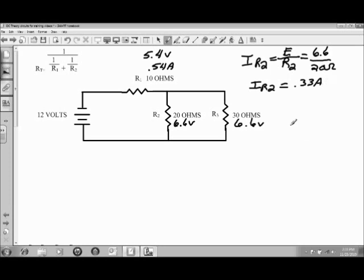We can repeat that step again. The current for R3 is going to be the voltage coming into the parallel branch divided by the value of the resistor at R3, or 6.6 volts divided by 30 ohms of resistance, and that number is 0.22 amps.